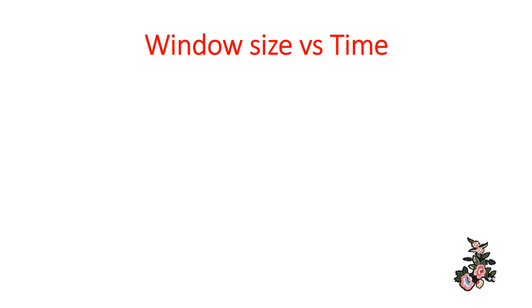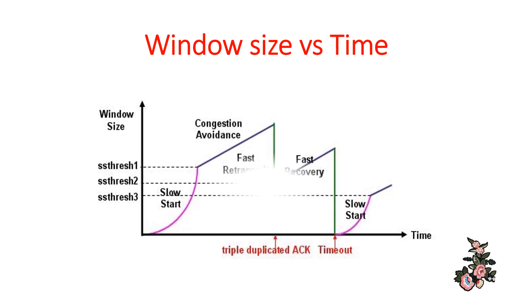Here is a graph indicating window size versus time. In this graph, we have the stages of slow start, congestion avoidance, fast retransmit, fast recovery, and slow start indicated.